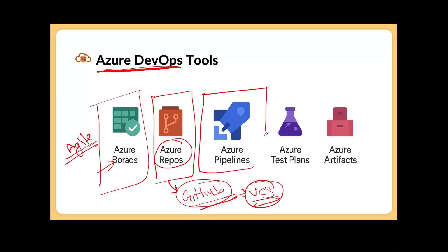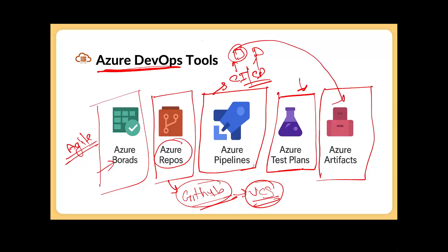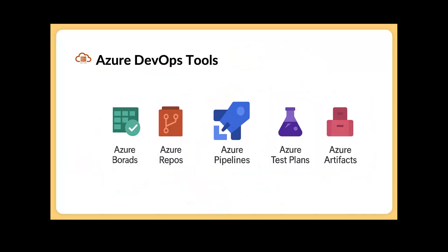Next is Azure Pipelines, and this is the most important tool we are going to use in this section for continuous integration and continuous delivery. Then we have Azure Test Plans, which is used when you want to use different features to test your application in the QA environment and pre-production environment. Finally, we have Azure Artifacts, which is where we can store our artifacts once they are ready from the CI process, before moving to continuous delivery.